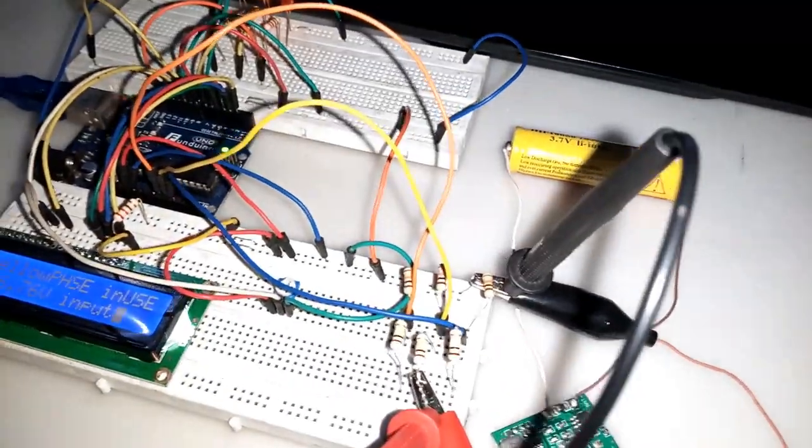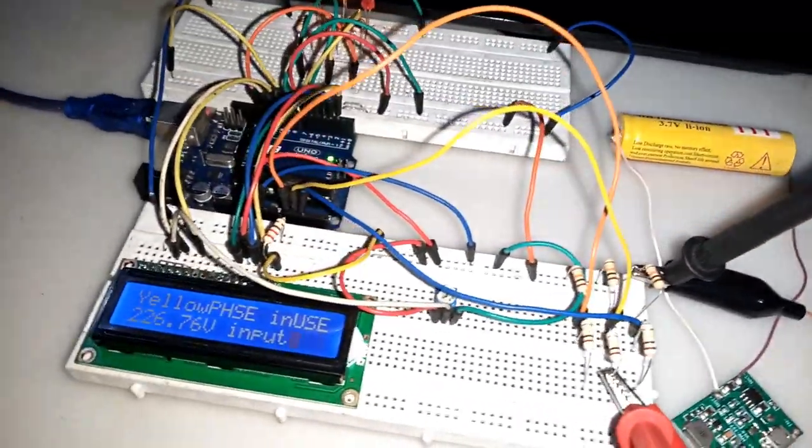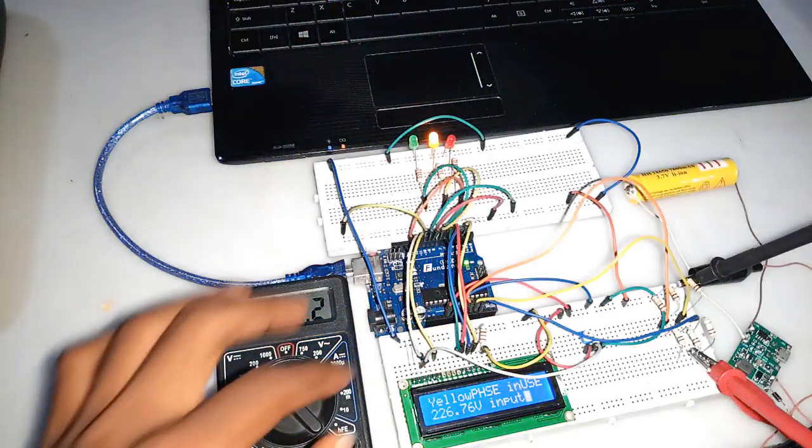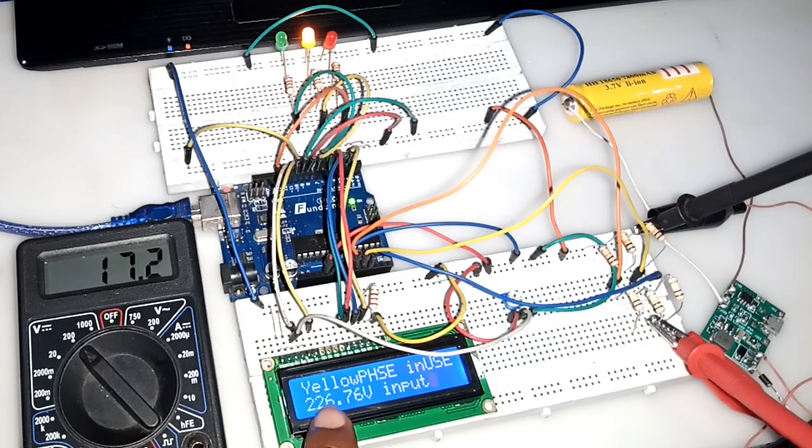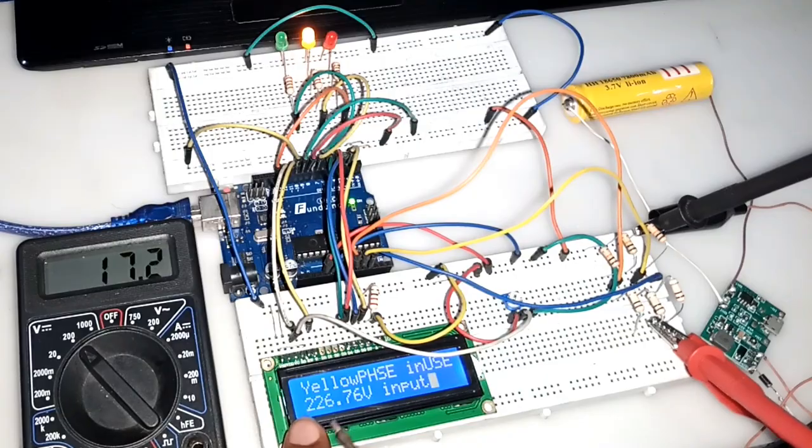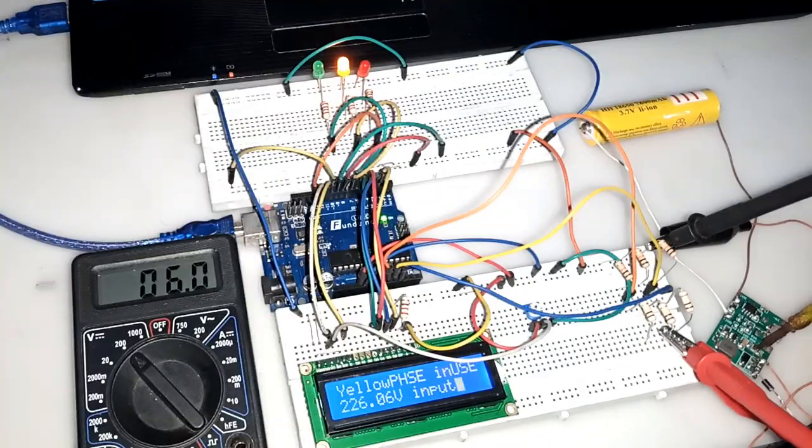I started by assembling the basic parts on the breadboard. Without the step-down transformer which is acting as the sensor to the input voltage, I used a boost converter module to simulate different voltage levels for the input AC voltage.